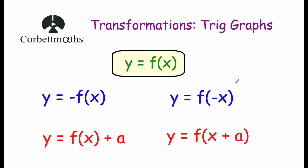Those videos give you an idea as to what those graphs look like. So first of all, let's recap the transformations at GCSE level. We've got in blue our reflections. y = -f(x) will reflect the graph in the x-axis — points above the x-axis go below, and points below go above. Points on the x-axis will stay where they are; they'll be invariant.